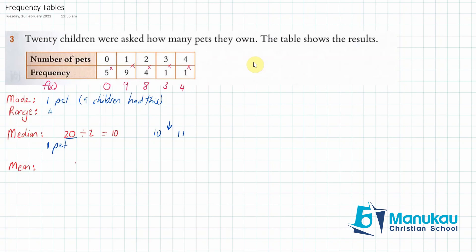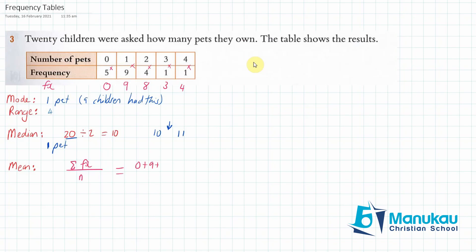So the mean is going to be — and we write it this way — the sum of fx, all over the number of items of data. I've just made a slight error writing it in function format, so fx without brackets. The sum of fx is going to be zero plus nine plus eight plus three plus four, and we know that there are 20 items of data.